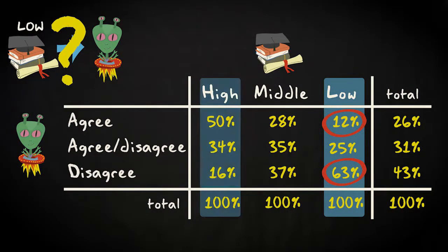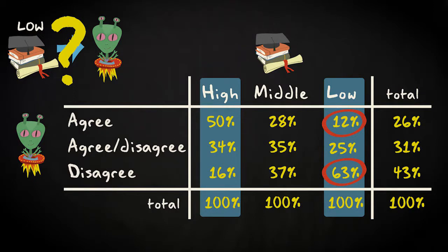And if we look at respondents with a high level of education, we see the opposite. 50% agrees with the claim that it is likely that there is extraterrestrial life. Whereas only 16% disagrees with this claim.